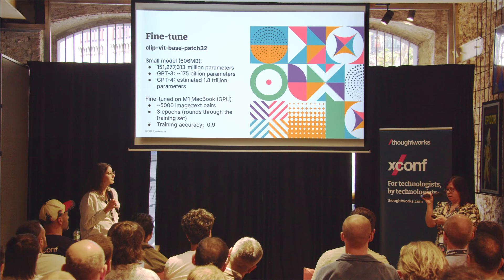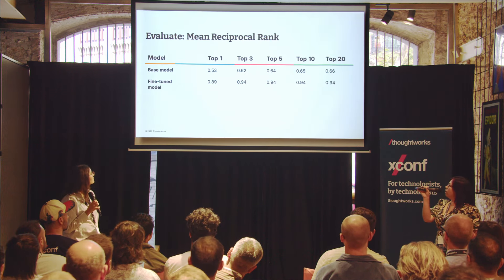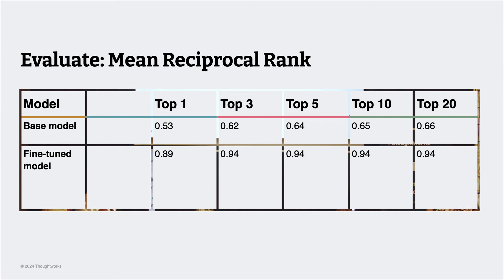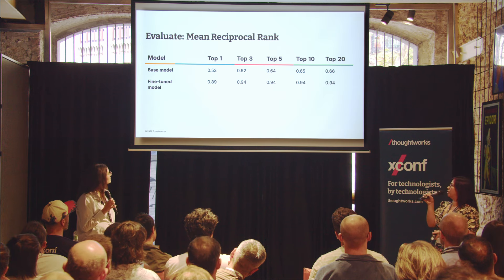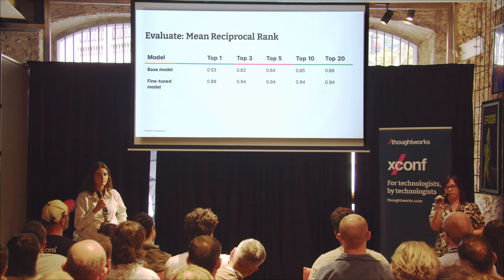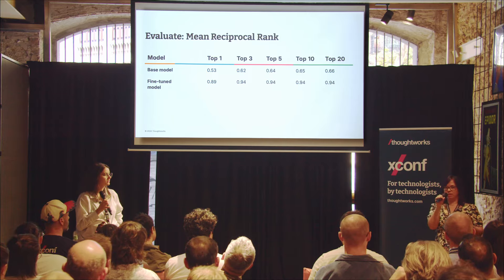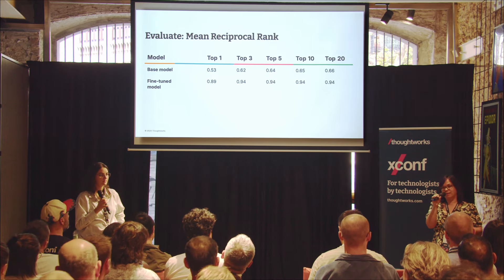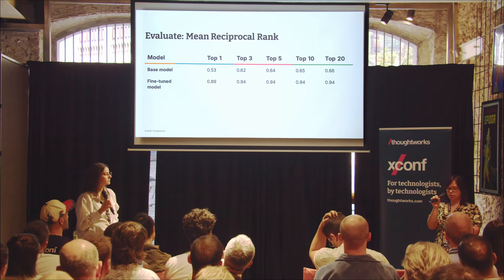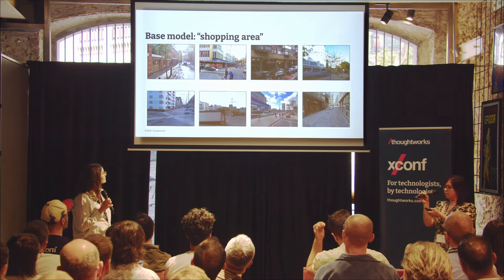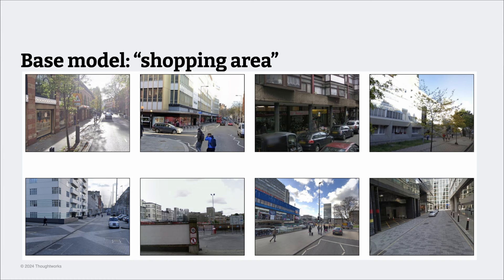You get a training accuracy of about 0.9. You can evaluate and compare the fine-tuned model against the base model using mean reciprocal rank. What that means is: given a text description, does the model directly return in the top one result the image that was part of that image-text pair — that's top-one, which is like accuracy. You can see it increases from 0.53 to 0.89. The other metrics show whether the model returns the correct image in the top three, top five, top ten, et cetera — it's a little bit looser since you're just ranking.